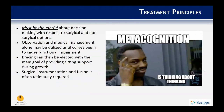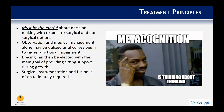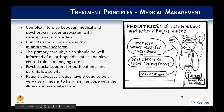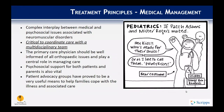In terms of treatment principles, you have to be thoughtful in your decision-making. Observation and medical management alone can be utilized until curves begin to cause functional impairment. Bracing can then be elected to provide sitting support during growth, but surgical instrumentation and fusion is often required. The complex interplay between medical and psychosocial issues is important, and it is really important to coordinate care with a multidisciplinary team.